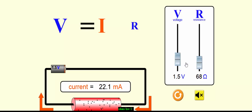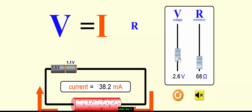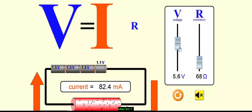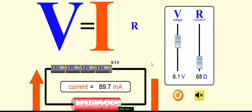Now I am increasing the voltage from 0.4 to 1.5 volts. The current is now 22.1 milliampere. You can see that when I increase the applied voltage, the current increases. I am still increasing the applied voltage to 2.9 volts. The current is now 4.6 milliampere. The applied voltage is 6.1 volts and you can see that the current has increased to 89.7 milliampere. It verifies the first statement.